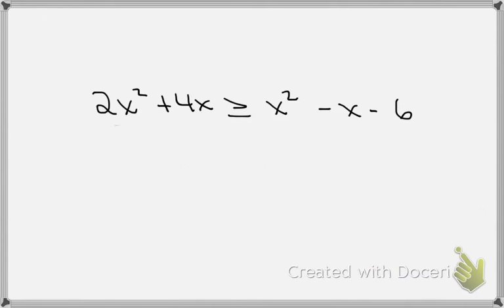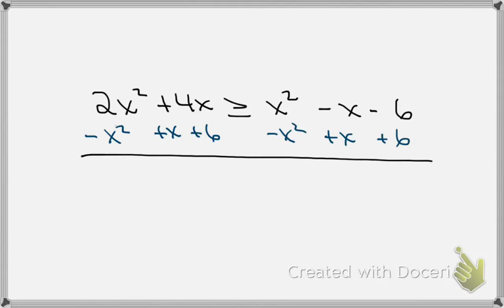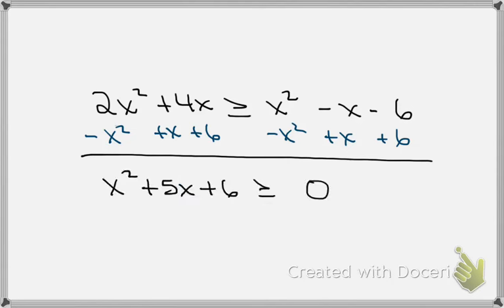We have 2x squared plus 4x is greater than x squared minus x minus 6. We're going to subtract x squared from both sides, add x to both sides, and then add 6 to both sides to make the right-hand side 0. When we do that, the resulting inequality will be x squared plus 5x plus 6 is greater than or equal to 0.